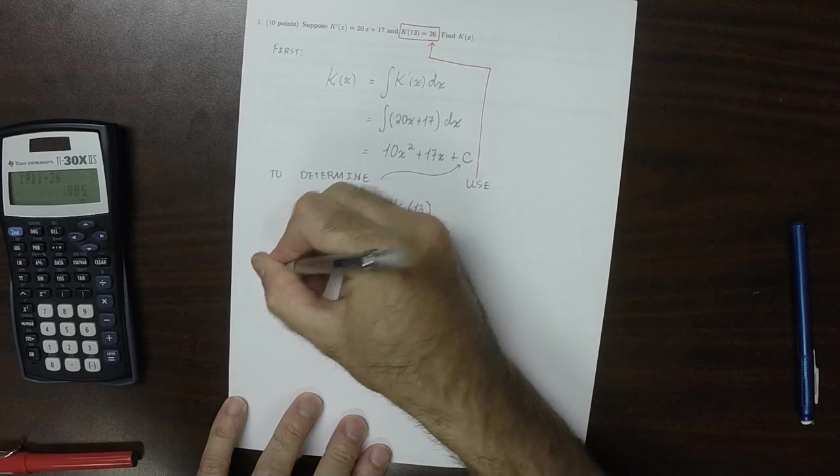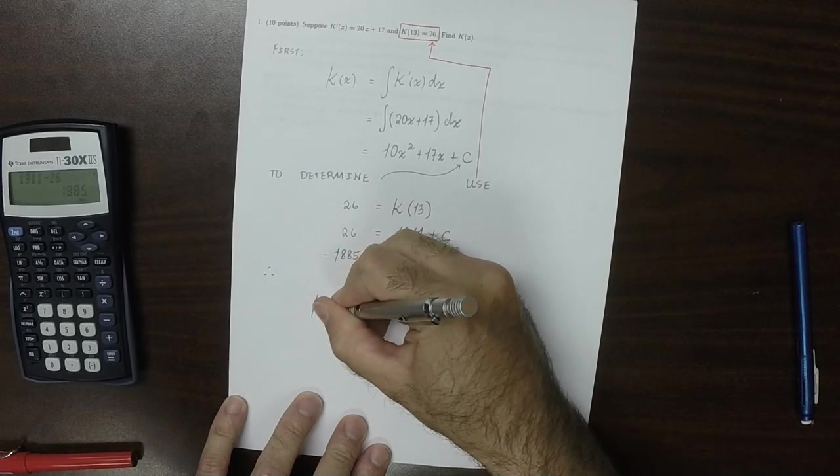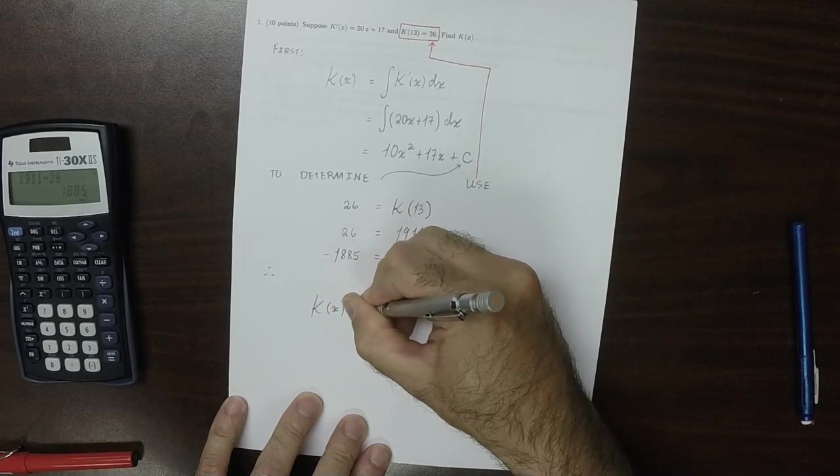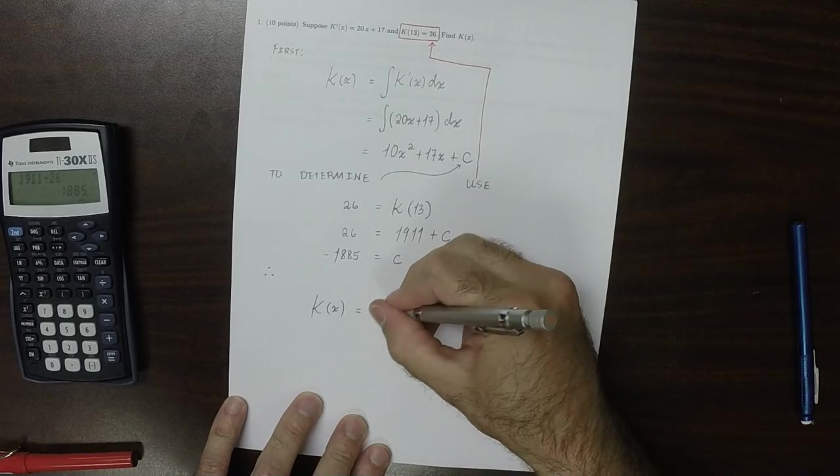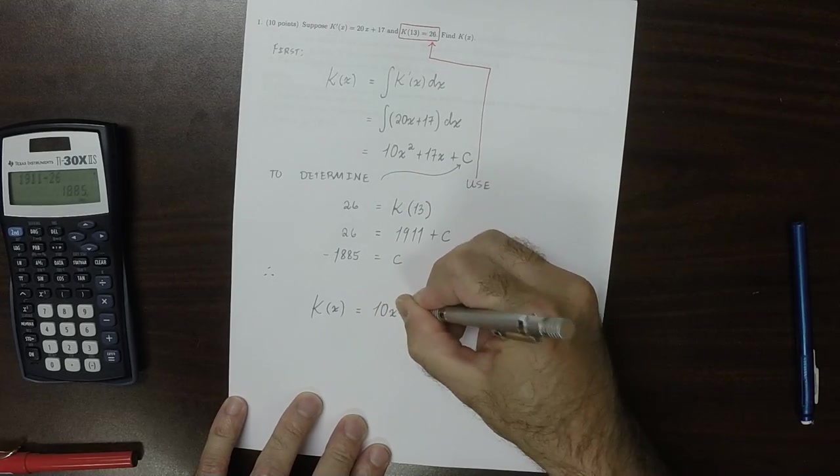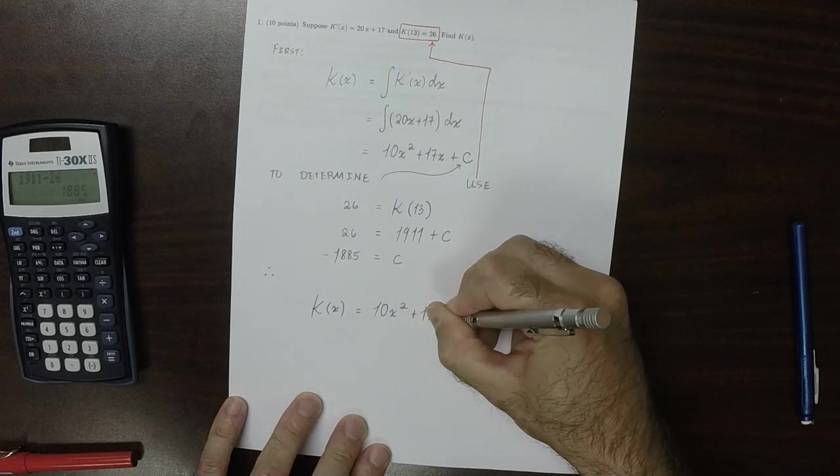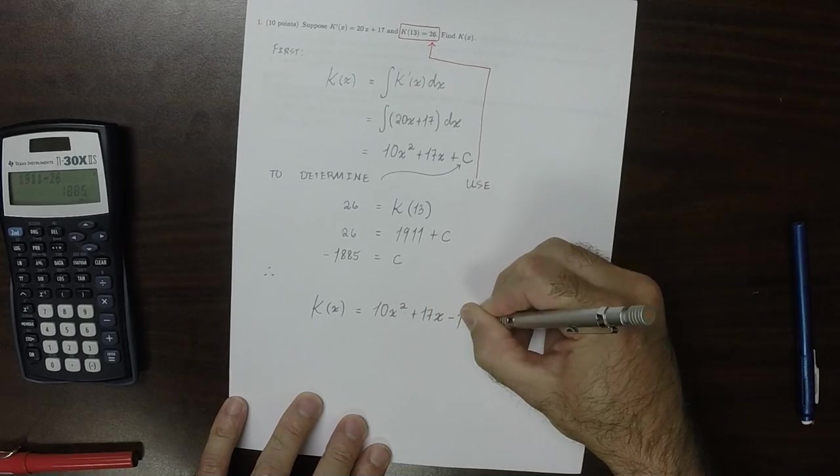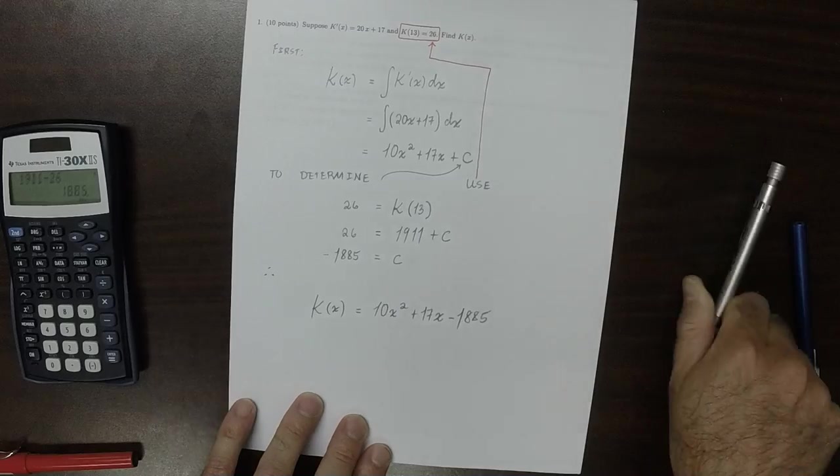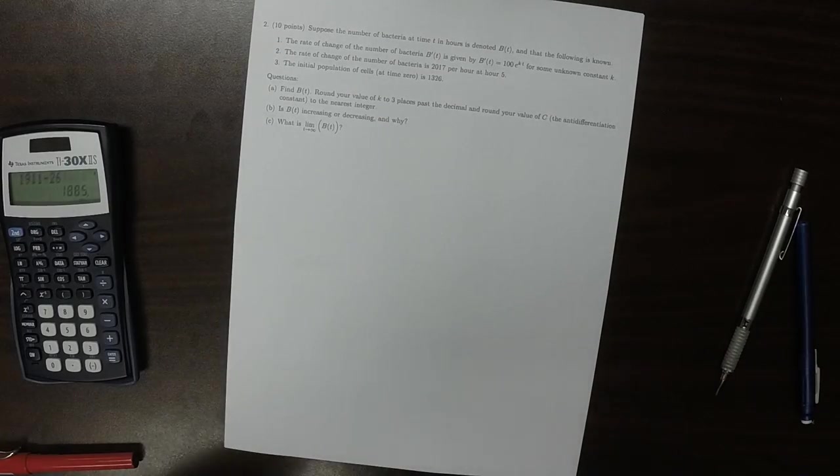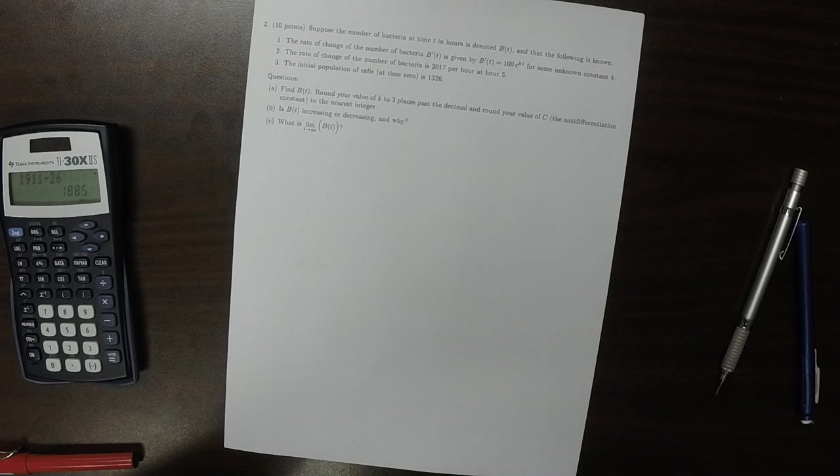And therefore, the answer to the exercise is that k(x) is 10x² plus 17x minus 1885.